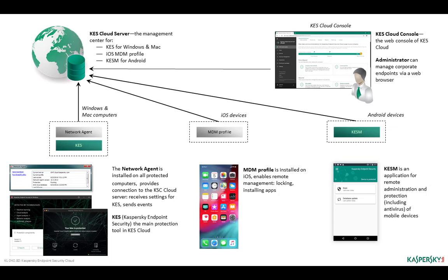Second, Kaspersky Endpoint Security Cloud console is a web interface through which the administrator can manage protection. Third, Network Agent and KESS for Windows and Mac — protection for Windows and Mac OS workstations and servers. These are actually four applications: Network Agent for Windows, KESS for Windows, Network Agent for Mac OS, and KESS for Mac. They are joined here because the pairs Network Agent plus KESS work similarly for Windows and Mac OS.